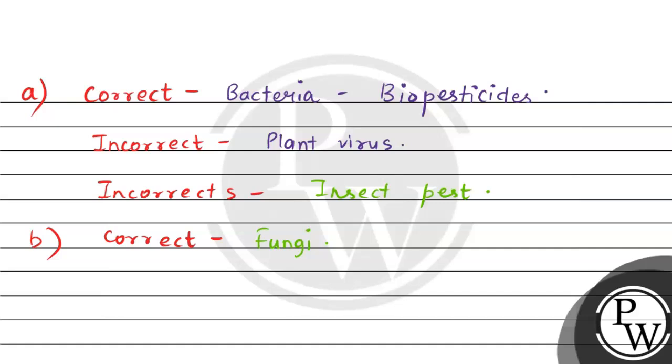Next we have Baculovirus. This is also correct because Baculovirus is used as a biocontrol agent, especially against caterpillar, which is a pest in agriculture. It infects and kills insect larvae.